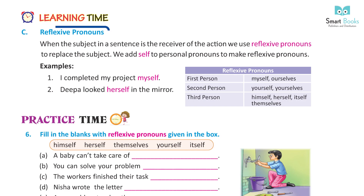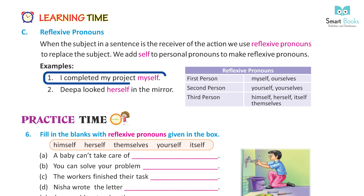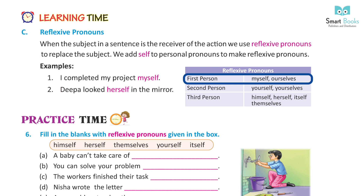Learning time — reflexive pronouns. When the subject in a sentence is the receiver of an action, we use a reflexive pronoun to replace the subject. We add 'self' to a personal pronoun to make reflexive pronouns. Examples: one — I completed my project myself. Two — Deepa looked herself in the mirror. Reflexive pronouns: first person: myself, ourselves; second person: yourself, yourselves; third person: himself, herself, itself, themselves.